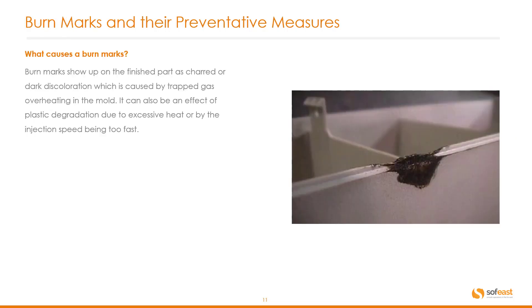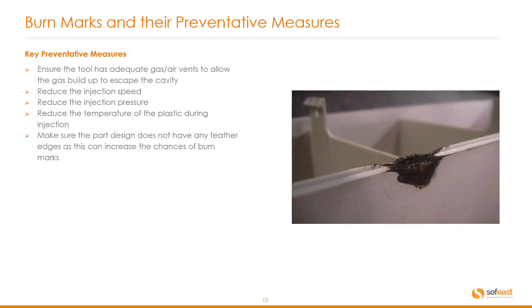Another common problem is burn marks. Burn marks show up on the finished part as charred or dark discoloration, which is caused by trapped gas overheating in the mold. It can also be an effect of plastic degradation due to excessive heat or by the injection speed being too fast. Key preventative measures: ensure the tool has adequate gas and air vents to allow gas build-up to escape the cavity; reduce the injection speed; reduce the injection pressure; reduce the temperature of the plastic during injection; and make sure the part design does not have any feather edges, as this can increase the chance of burn marks.